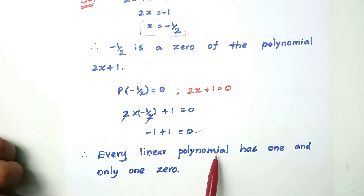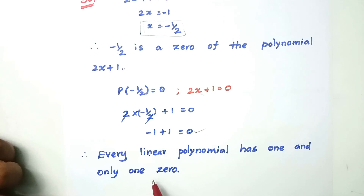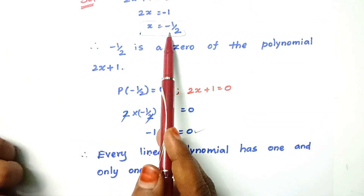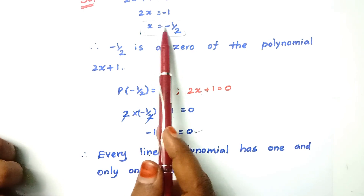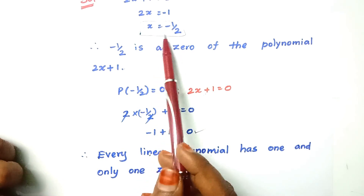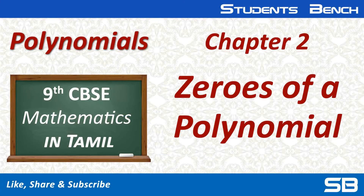Every linear polynomial has one and only one zero. If you like this video, please share and subscribe. Thank you.